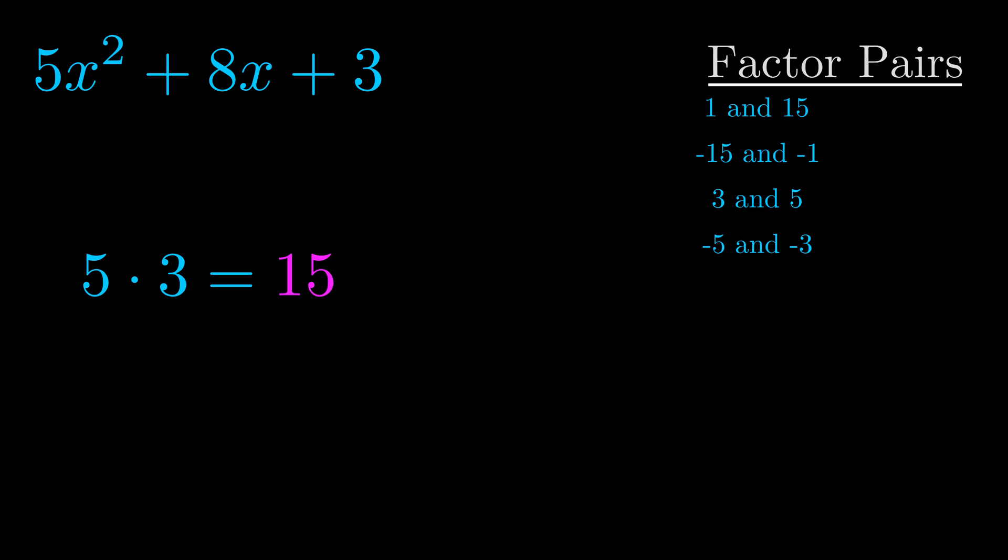The b value is the coefficient on the x term. That's the middle term, the one that we haven't done anything with yet. And really this is the only factor pair that we need.